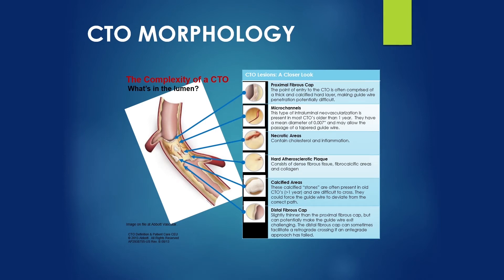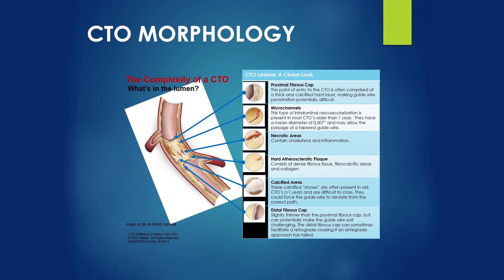Coronary CTO morphology is complex. Proximal and distal caps are composed of fibrous and calcified cap. Intervening segments may contain microchannels, necrotic area, atherosclerotic plaque, as well as calcification.